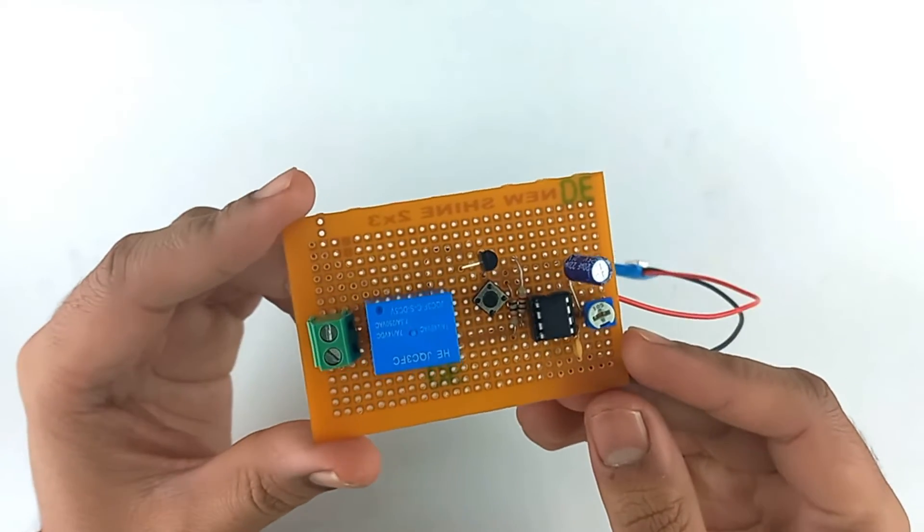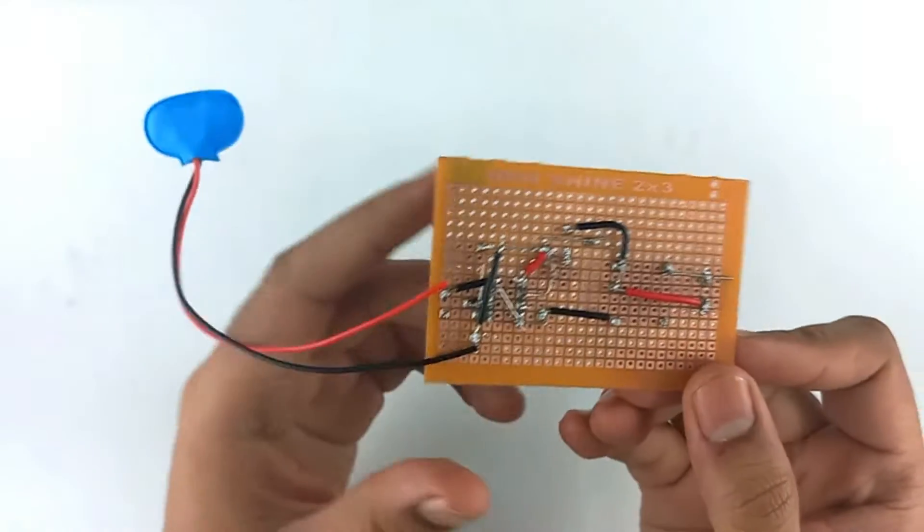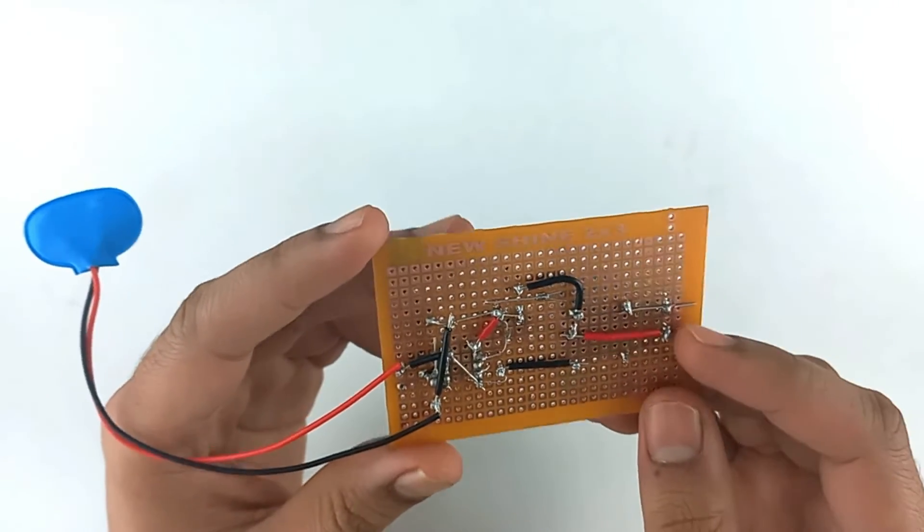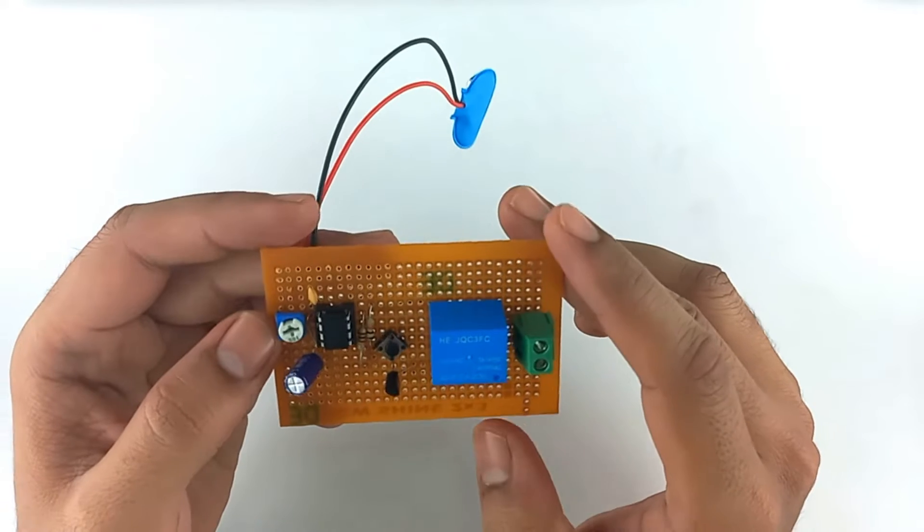This is the top view of our circuit board, and this is the bottom view where we have done our soldering. So we have made our circuit. Now let's see what are the connections.